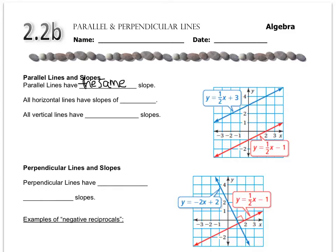Reminder that all horizontal lines have a slope of zero, and all vertical lines have no slope or an undefined slope.